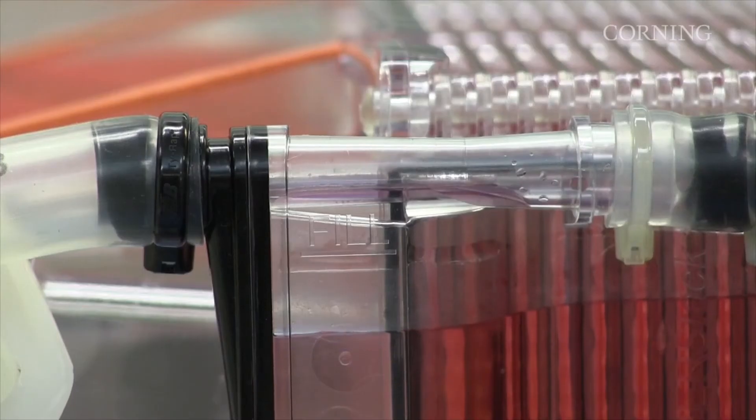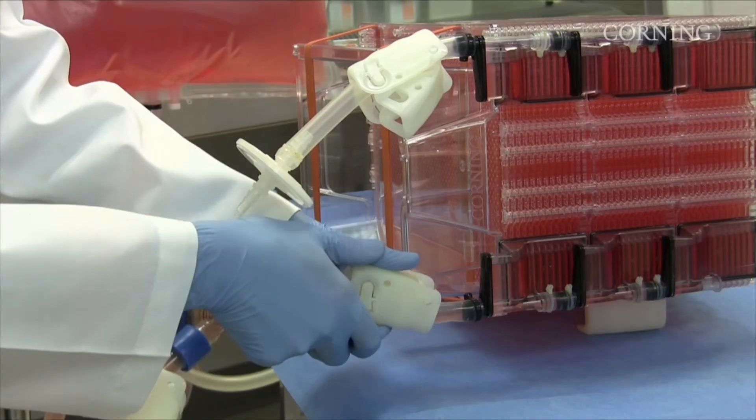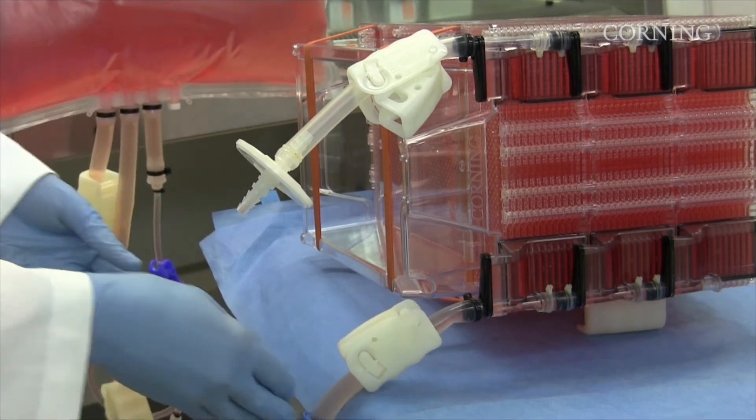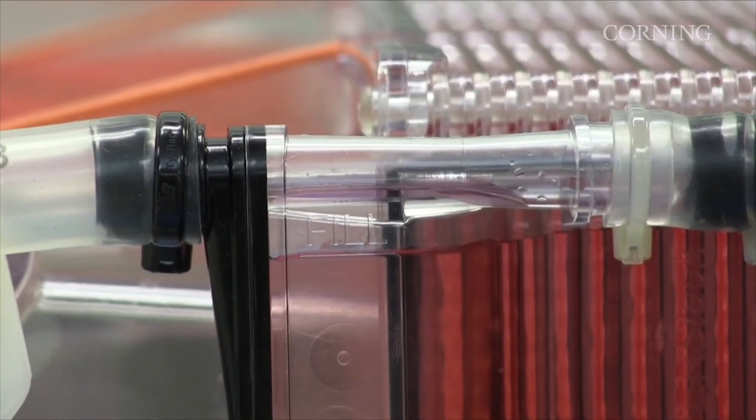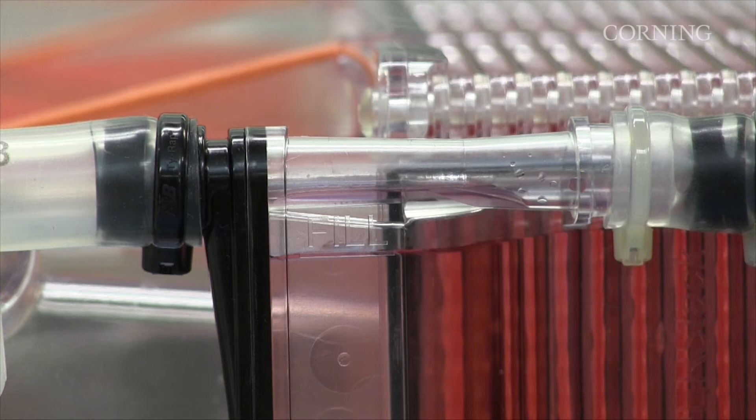When liquid approaches the fill mark on the air manifold, close the liquid handling tubing clamp to stop flow into the HyperStack vessel. You may notice liquid levels continue to rise slightly even with the fill line clamp closed. This is normal and expected. If the HyperStack vessel is filled until it is visibly full, the vessel will overflow and pressurize, which increases the risk of vessel failure.